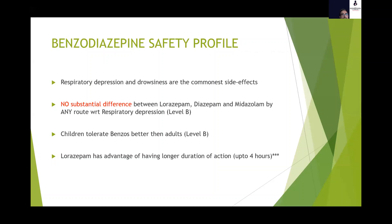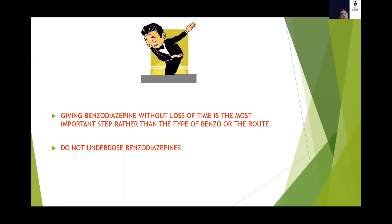Coming to the safety of benzodiazepines, there is usually some concern among emergency physicians about the risk of respiratory depression and drowsiness. However, there is no substantial difference between the three main benzodiazepines as far as respiratory depression is concerned, and children tolerate benzos much better than adults per kilogram of body weight. One distinct advantage of lorazepam, if available, is that its duration of action is up to four hours, whereas the other benzos have a shorter duration of action. The take-home message is that giving a benzodiazepine without loss of time is the most important step, rather than which benzodiazepine or which route you use. Utilizing proper doses is very important — don't underdose, as that might lead to failure of seizure abortion.